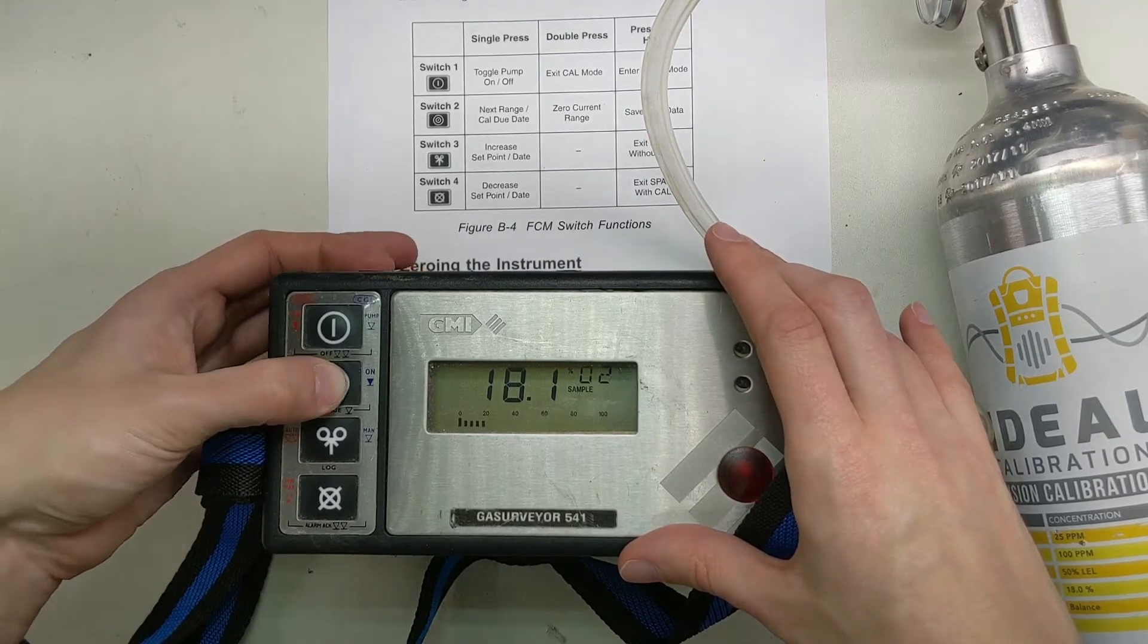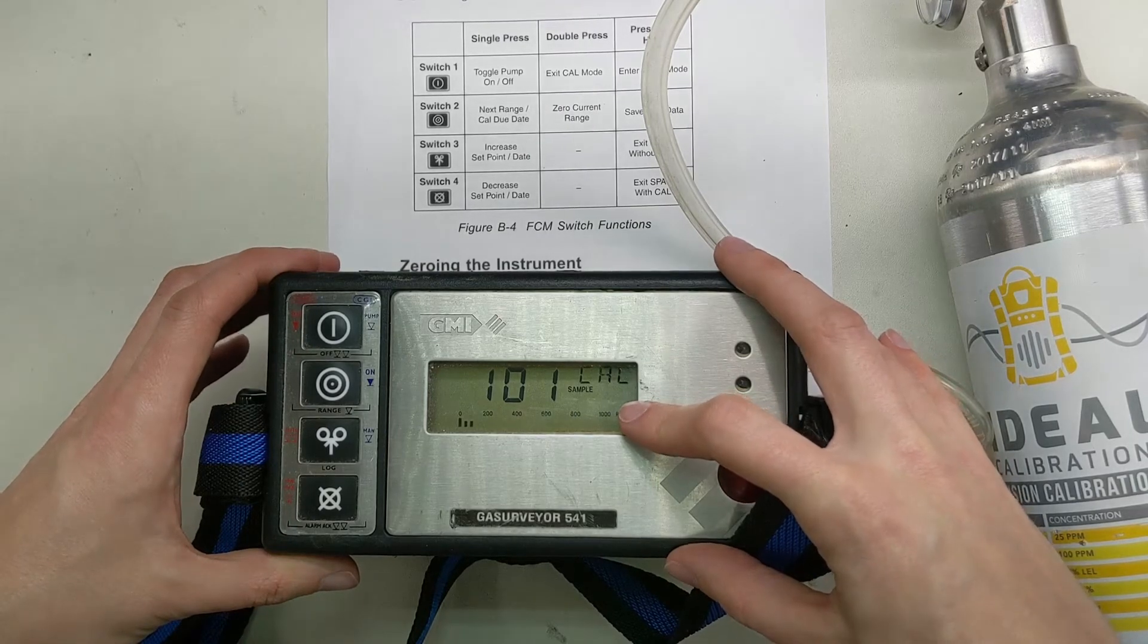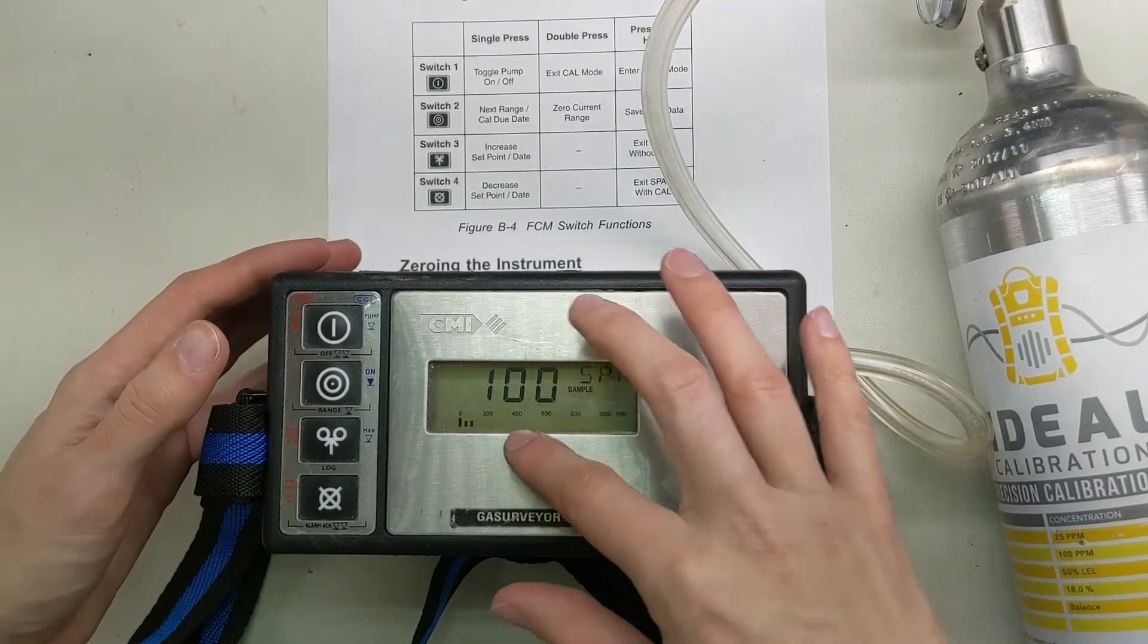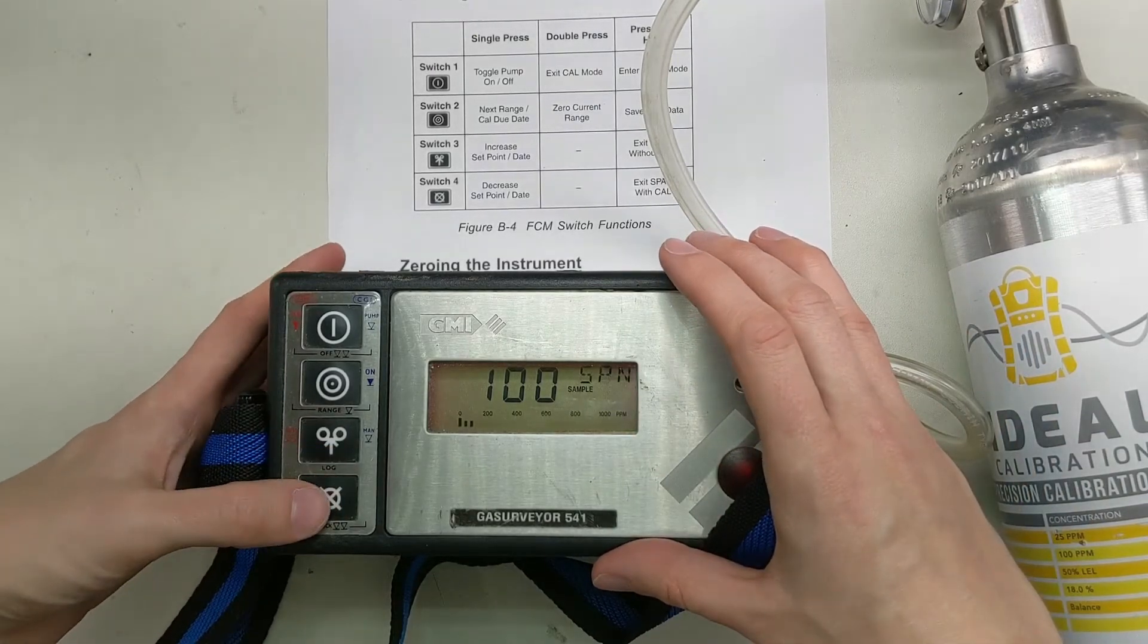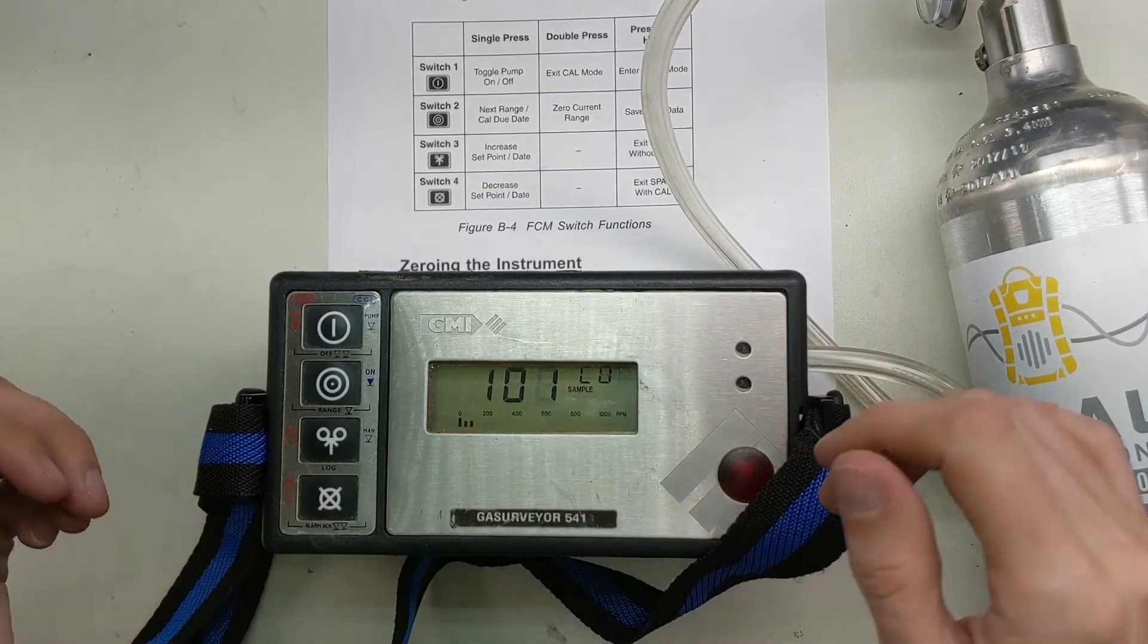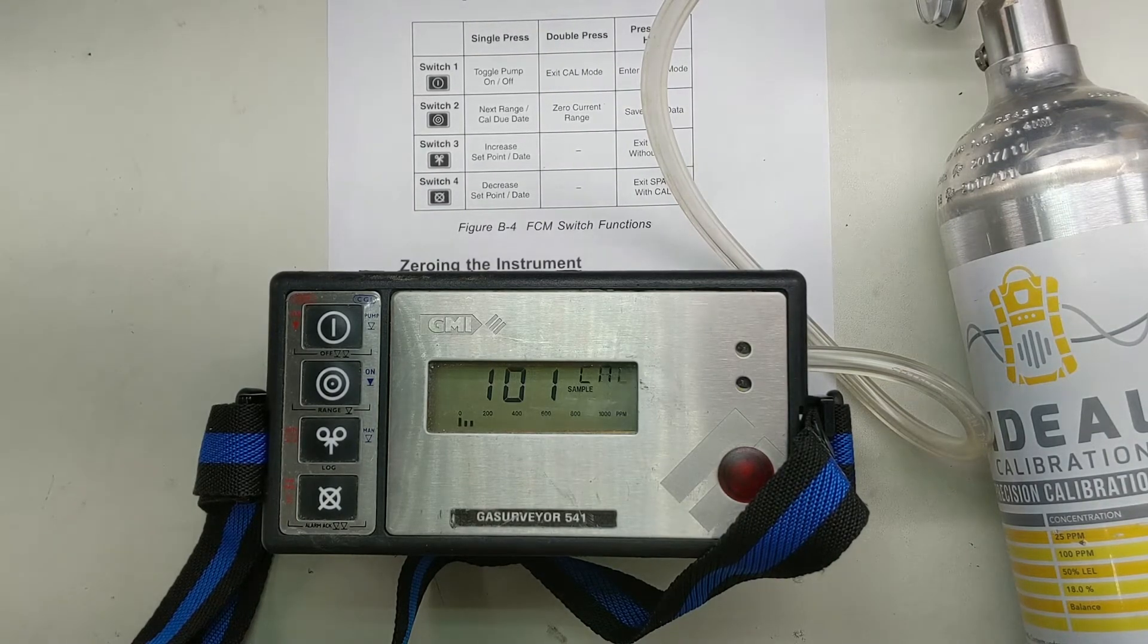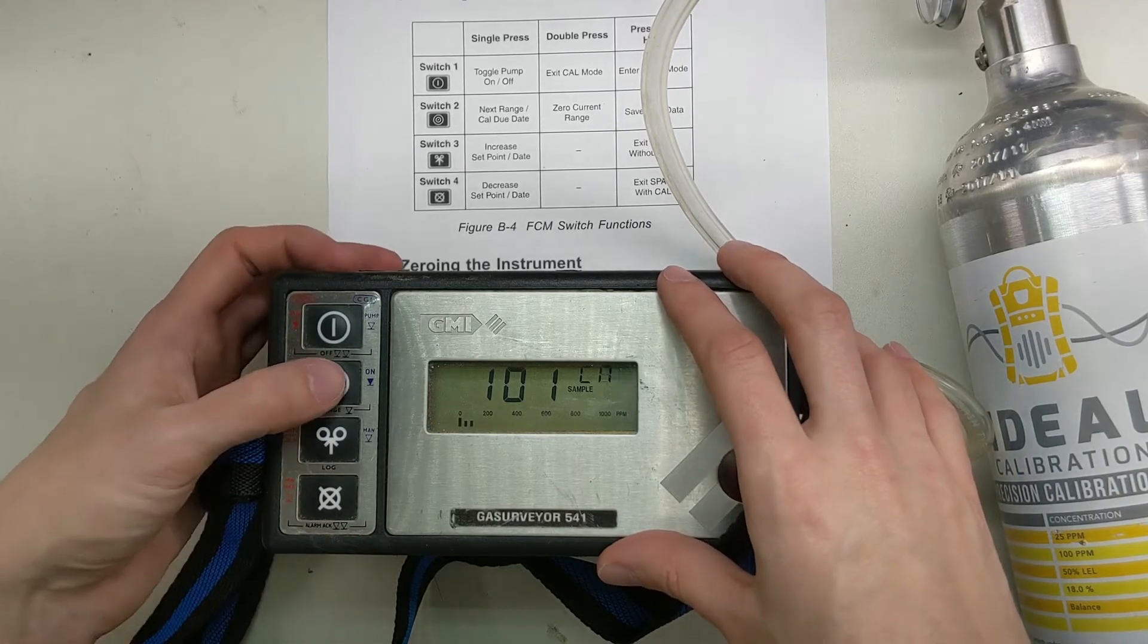Let's move to our next one. We go to next range, press this button once. This is going to bring us to CO. What we're going to do is enter span mode. Looking for 100, that's what we've got. Good deal. We're going to number four, exit span with Cal. It's bouncing right around the 1% range. That's accurate enough for us.